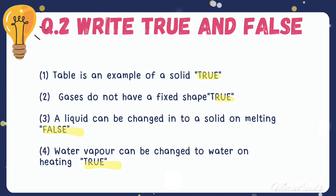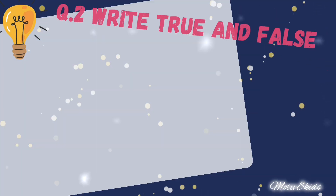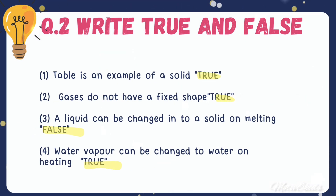Question number two: write true and false. A table is an example of a solid — this is true. Gases do not have a fixed shape — this is also true. A liquid can be changed into a solid on melting — this is false. Water vapors can be changed to water on heating — this sentence is true.